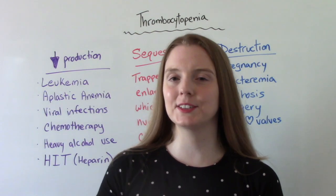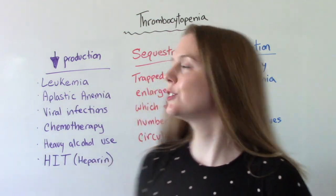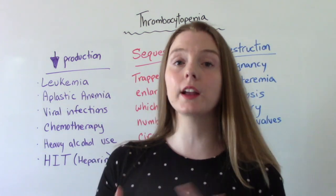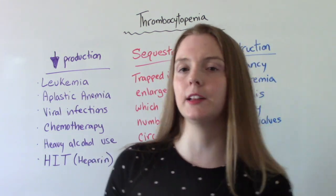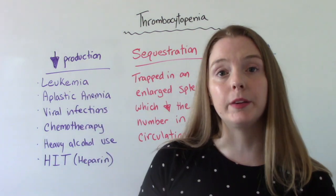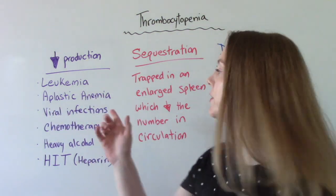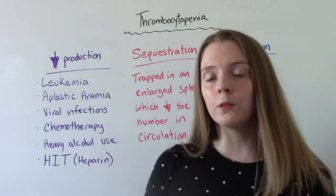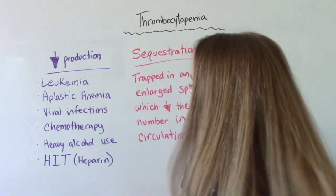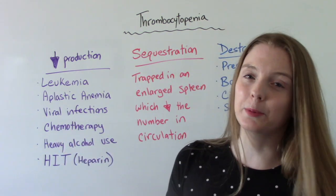Now let's talk about those three types in a little bit more detail. Starting with decreased production — what can cause a decrease in platelet production? Certain cancers like leukemia. Aplastic anemia — this is a type of anemia in which the bone marrow stops making new blood cells. Viral infections. Chemotherapy.